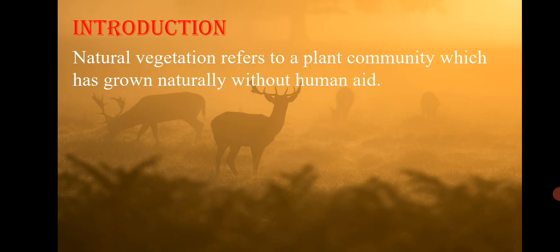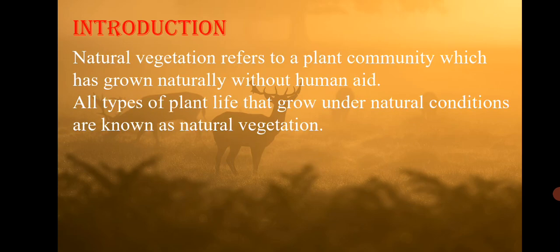Natural vegetation means a plant community which has grown naturally without human aid. All types of plant life that grows under natural conditions are called natural vegetation — a plant community which has grown without human interference.